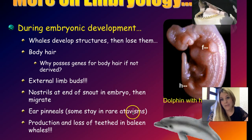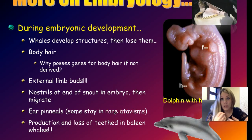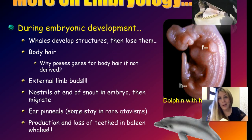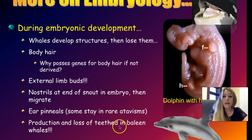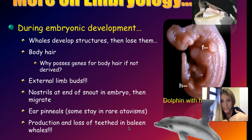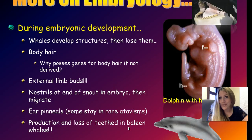In some atavistic individuals, actual ears remain rather than closing up during development. Regarding teeth: some whales like the killer whale have teeth, while baleen whales have lost their teeth. Yet during embryonic development, baleen whale embryos actually produce teeth, and then lose them before birth — again, evolution retracing what happened over time.